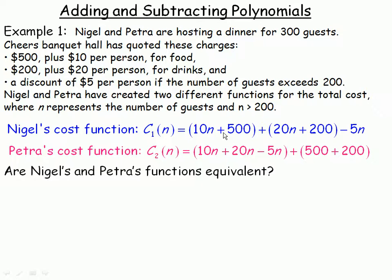So that's $10 per person plus the $500. And then he's gone to the drinks, so the $200 plus the $20 per person. And then he's handled at the end, he's taken off the discount, $5 per person. So minus $5 times the number of people.